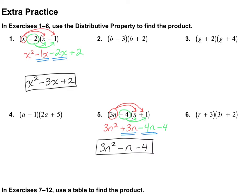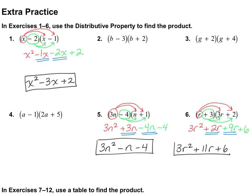I'll go ahead and do one more problem. Let's take a look at number 6. r multiplied by 3r is 3r squared. r times 2 is 2r. 3 multiplied by 3r is 9r. And 3 times 2 is 6. Now we need to combine our like terms, so my final answer is 3r squared plus 11r plus 6. I would like you to go ahead and try numbers 2, 3, and 4 on your own.